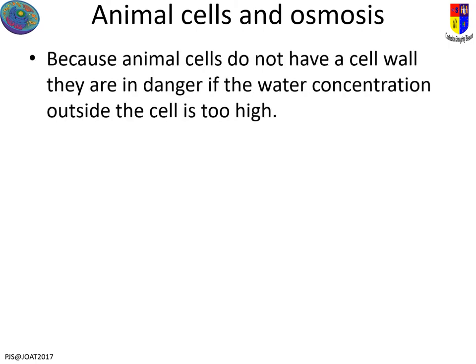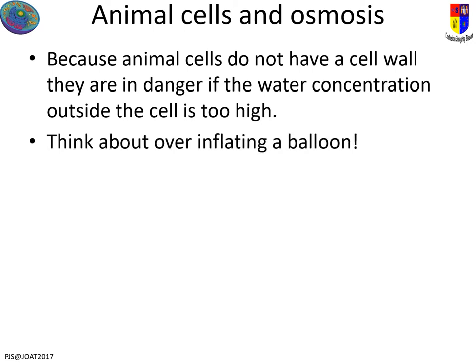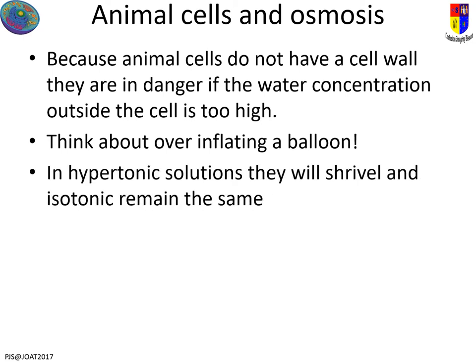Starting with animal cells: animal cells don't have a cell wall, so if our water concentration is too far from the concentration outside, we start to have a problem. If the water concentration outside the cell is too high, osmosis moves water in. Think of it like a balloon — you're basically over-inflating it and eventually it's going to burst, so the cell will just die. On the other side, if the concentration outside is too low, the cell dumps water out and starts to shrivel up. It might not kill them straight away, but they'll struggle to function.